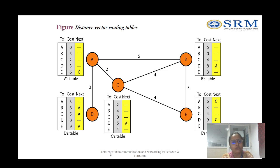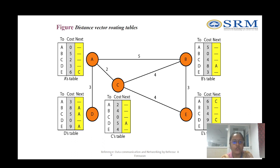Let us look at distance vector routing tables using this figure. There are five nodes: A, B, C, D, and E. A to B costs 5, A to C costs 2, A to D costs 3, and there is no direct route to E — it is reached only through C. So A to A is 0, A to B is 5, A to C is 2, A to D is 3. For E, the next hop is C: A to C is 2, C to E is 4, so A's cost to E is 6.